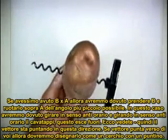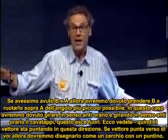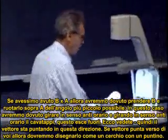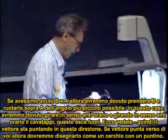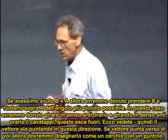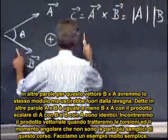If we had B cross A, then you take B in your hands and you roll it over the shortest angle to A. Now you have to rotate counterclockwise. And when you rotate counterclockwise, the corkscrew comes to you. There you go. And so the vector is now pointing in this direction. And if the vector is pointing towards you, then we would indicate that with a circle and a dot.